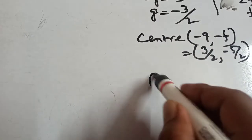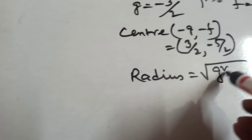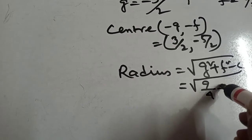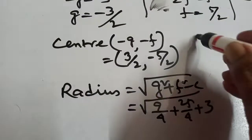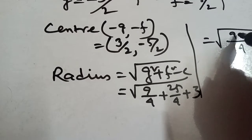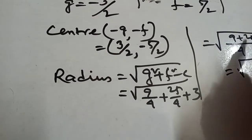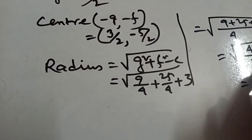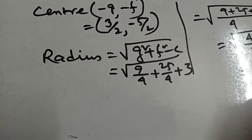Now, radius = √(g² + f² − c), that means √(9/4 + 25/4 − (−3)) = √(9/4 + 25/4 + 12/4). The LCM is 4, so that gives √((9 + 25 + 12)/4) = √(46/4) = √46 / 2. This is the answer.